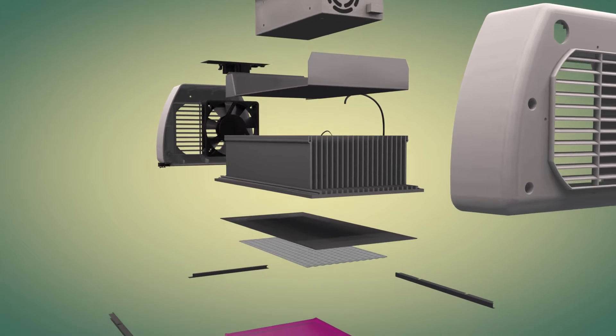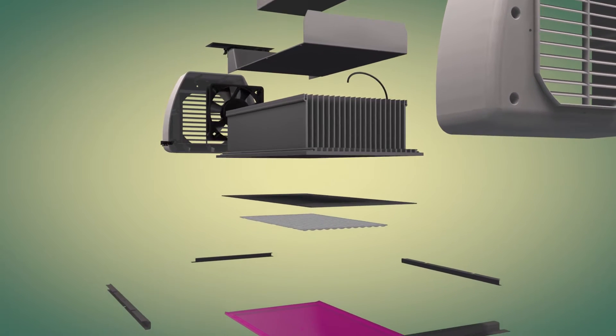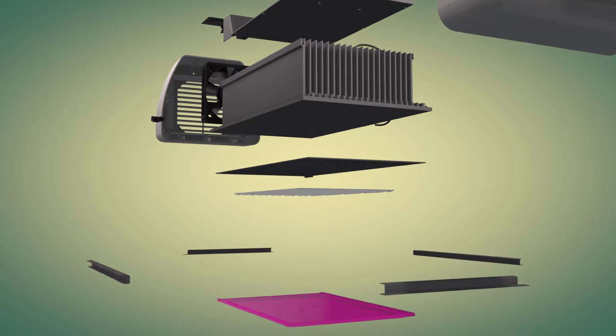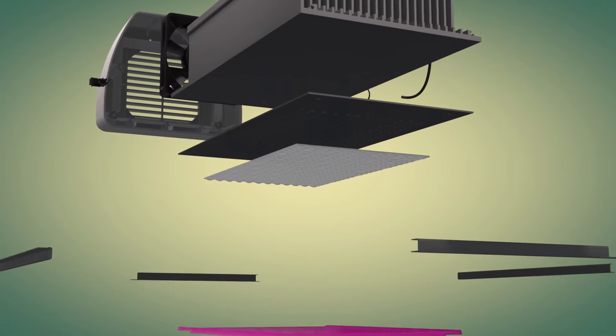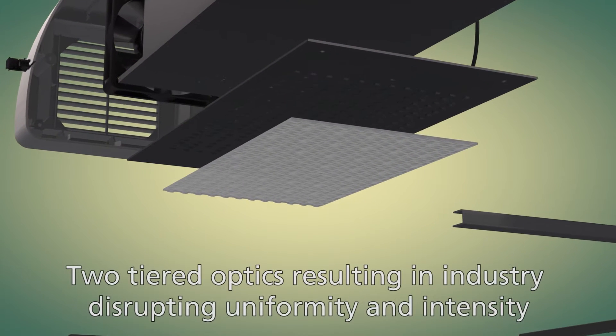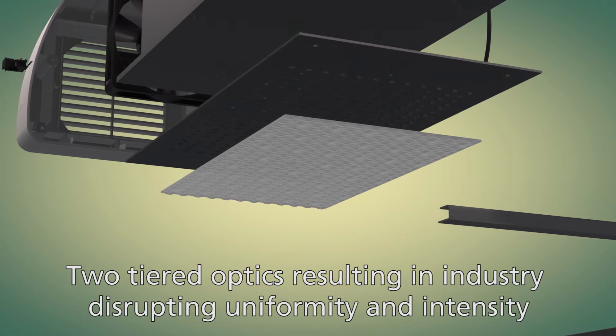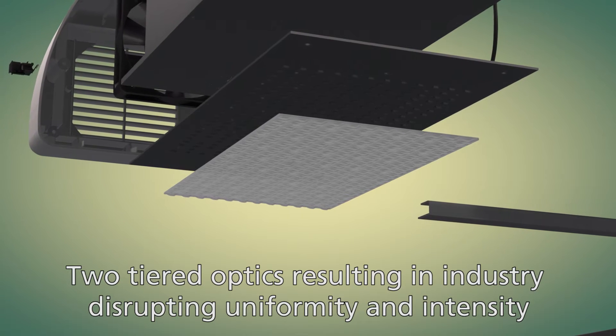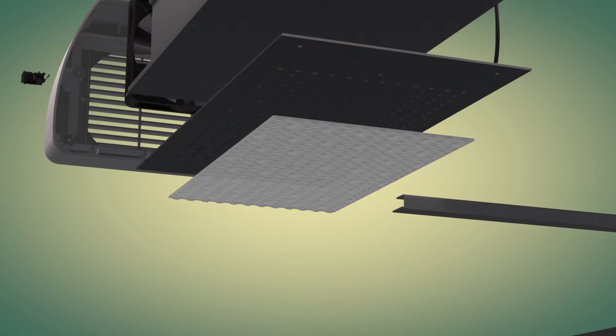Each diode in a Heliospectra grow light has a distinct optical lens resulting in superior luminosity and uniformity. This is where other grow lights fail and why Heliospectra truly is a substitute for 1000 watt HPS.